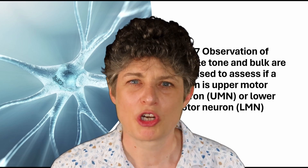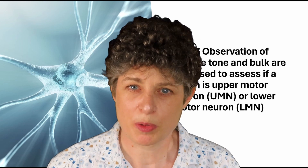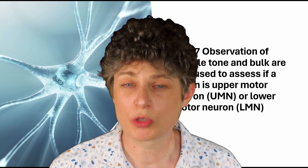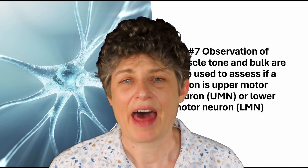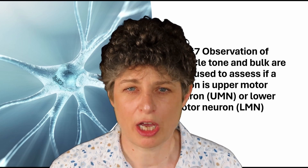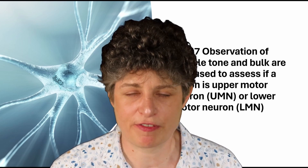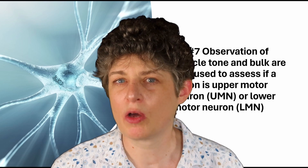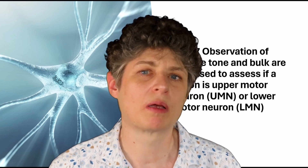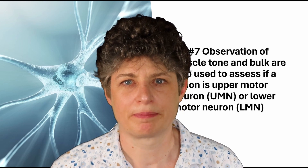This final top tip also relates to localising a problem to the spinal cord or the neuromuscular system, using the degree of muscle tone, bulk, and whether or not there's any muscle atrophy to help localise the problem to being an upper motor neurone lesion or a lower motor neurone lesion.